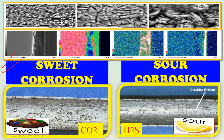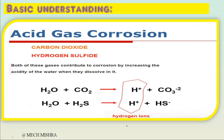Hey guys, welcome to Magmisra channel. Today's topic is very interesting — it's the fifth lecture in the corrosion series. Here we will discuss sweet corrosion and sour corrosion. Sounds interesting, right? These are not about taste — sweet corrosion is CO2-based and sour corrosion is H2S-based. So let's start and by the end of the session you will be learning a lot of things.